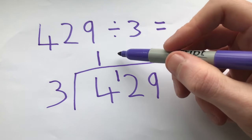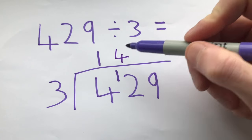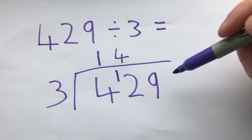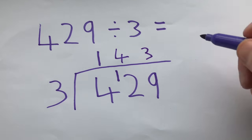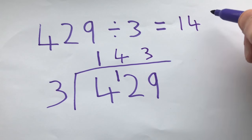it's three, six, nine, twelve, it's four times. And finally then, how many threes go into nine? And again we know that that is three, so our answer is 143.